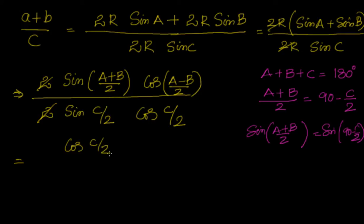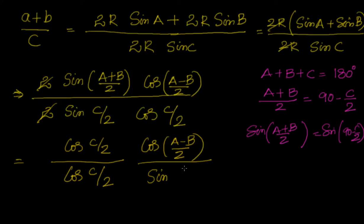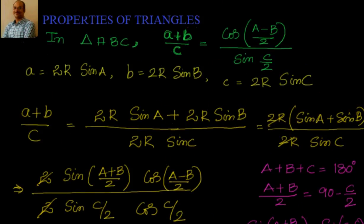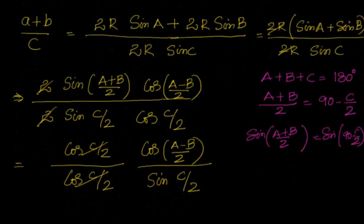Sin((A+B)/2) is sin(90 - C/2), that is cos(C/2). I have another cos(C/2) here. Then I have cos((A-B)/2) divided by sin(C/2). Cancels out. We will have (a+b)/c equals cos((A-B)/2) divided by sin(C/2).